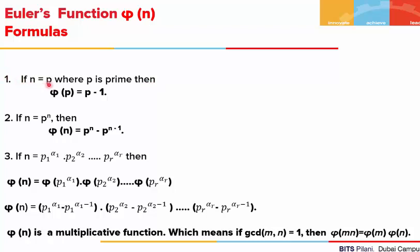If n is a prime p, then phi(p) = p minus 1. If n is a prime power, then phi(p^n) = p^n minus p^(n-1). And lastly, if n is a product of prime powers, then phi is a multiplicative function, so phi will operate on each prime power: phi(n) = phi(p1^alpha1) × phi(p2^alpha2) × ... × phi(pr^alphar). We then apply the second formula to each term.